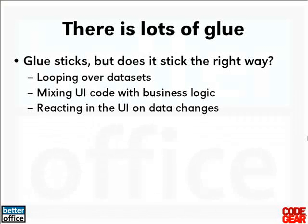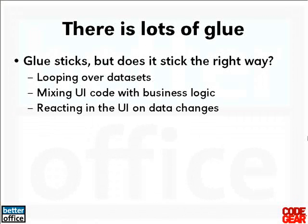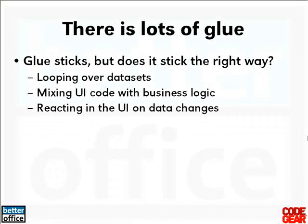Who hasn't started writing an on-click event handler and doing user interface stuff and business logic at the same time in the same procedure? Similar for reacting in user interfaces on changes of data — how do you react on that? What components do you use? Where is your logic? Is that in the user interface or is it in another layer? Sometimes it's mixed, and getting that glue out of the way is a key aspect of getting your applications more stable and more maintainable.